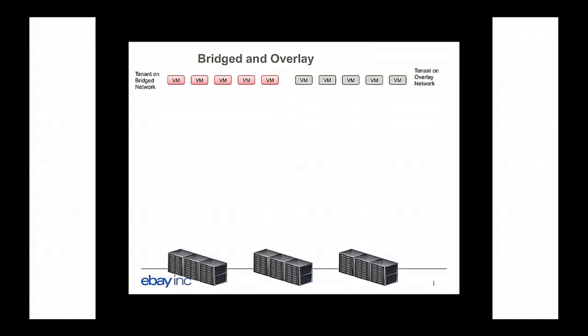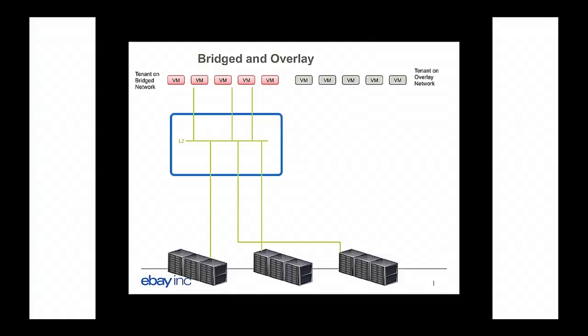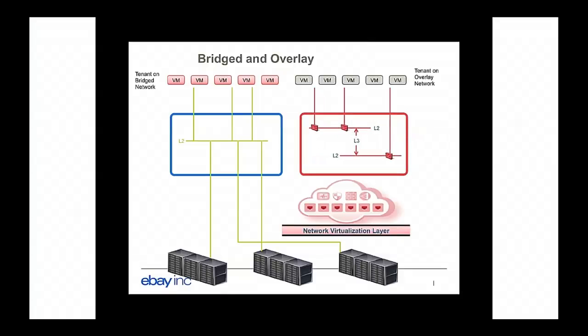We have compute racks at the bottom. On the top left, you have a tenant living on a bridge network, and a tenant living on an overlay network. Both share the same network resources. The bridge tenant directly uses provider networks to configure their networks, and their VMs are directly plumbed into the physical networking gear. The overlay tenant goes through our overlay virtualization SDN controllers to provision their workload.